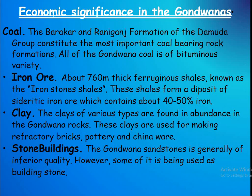The economic significance of the Gondwanas. Coal: The Barakar and Raniganj formations of the Damuda Group constitute the most important coal-bearing formations. All of the Gondwana coal is of the bituminous variety. Iron ores: About a 760-metre-thick Pahandi shale, known as the ironstone shale. These shales form a deep deposit of sideritic iron and contain about 40–50% iron. Clay: Clays of various types are found in abundance in the Gondwana rocks. These clays are of use for making refractory brick, pottery, and sand.